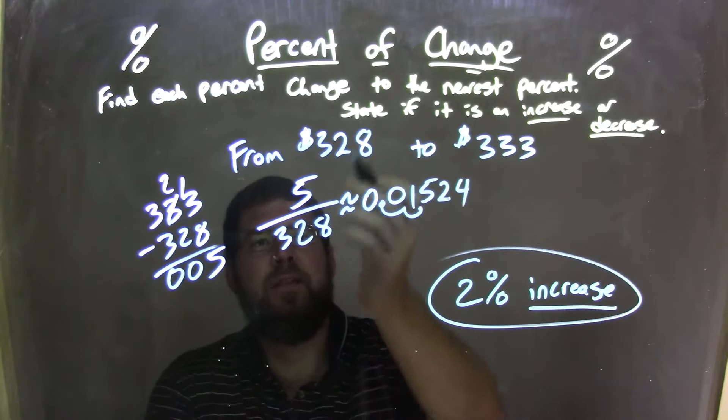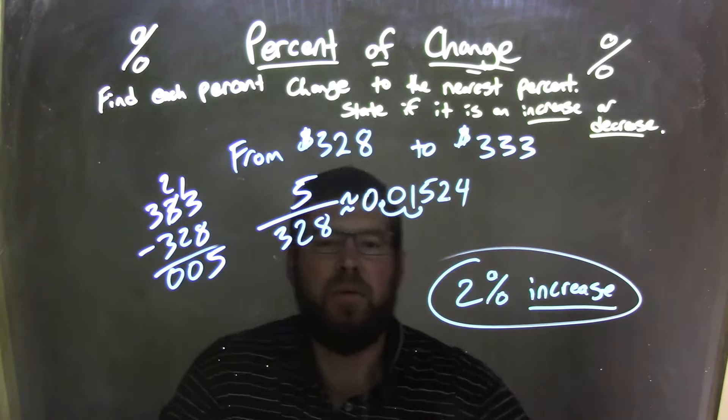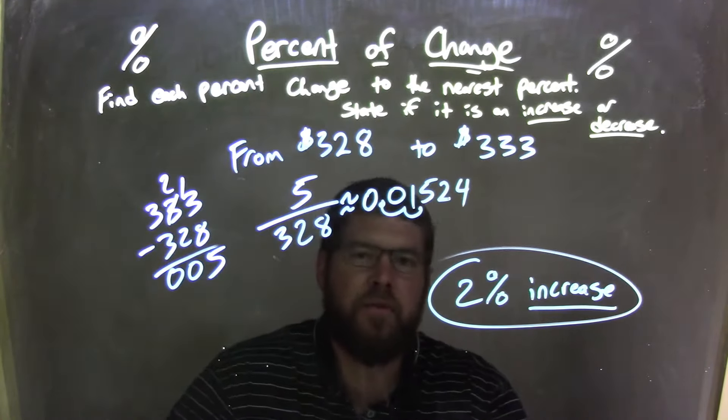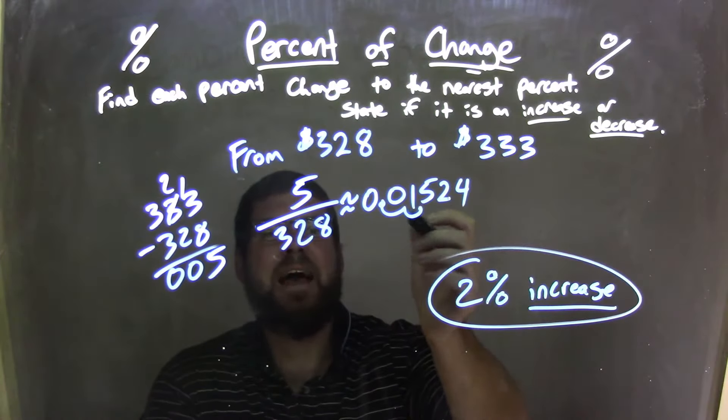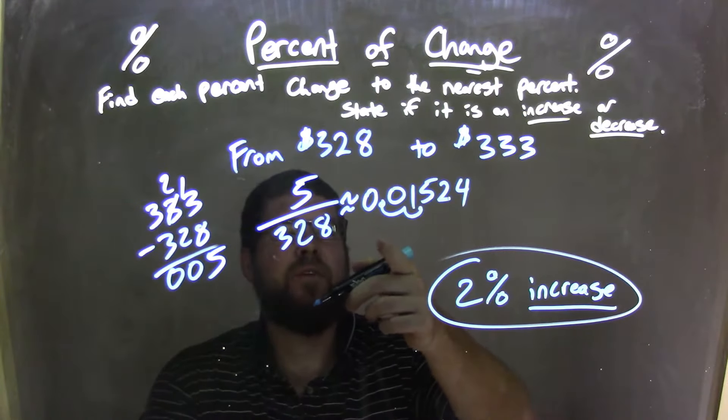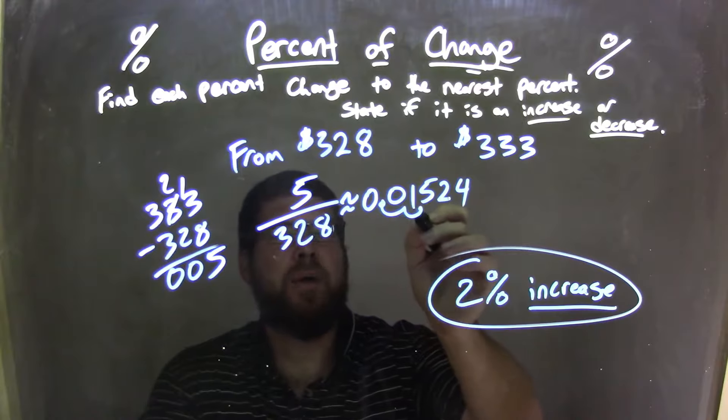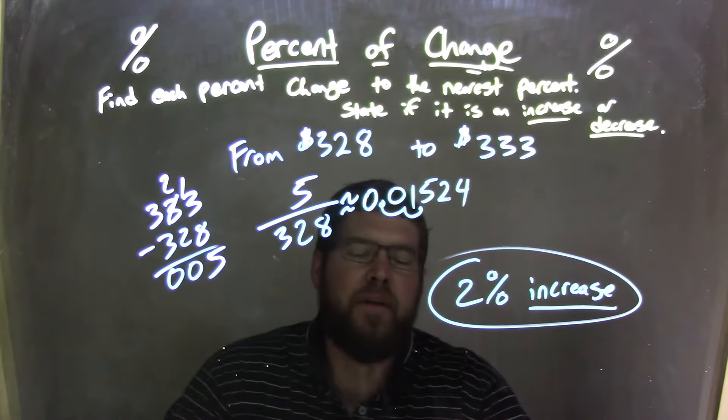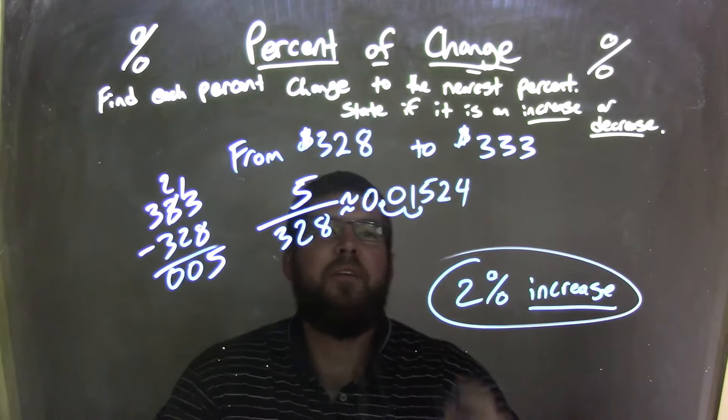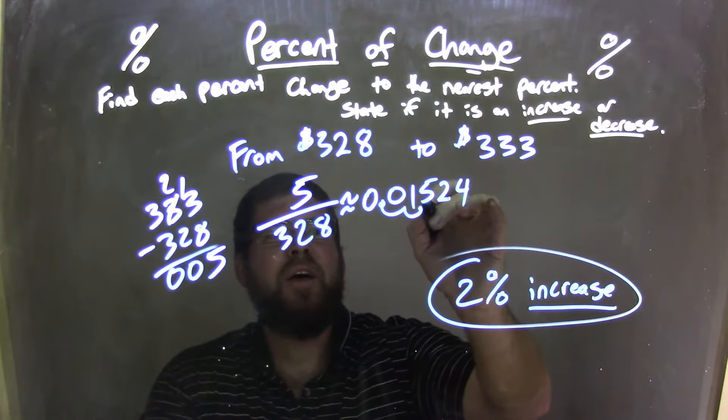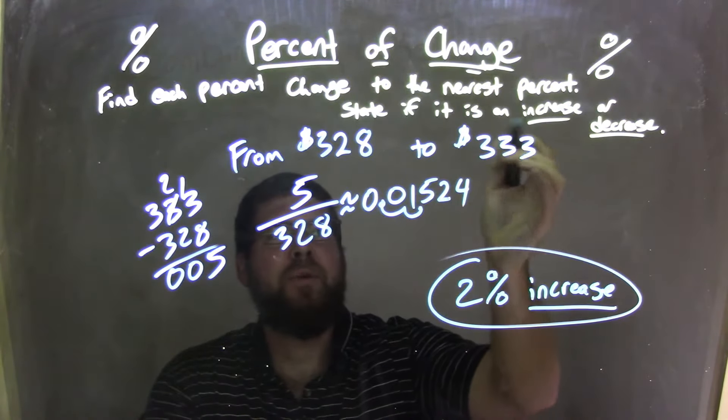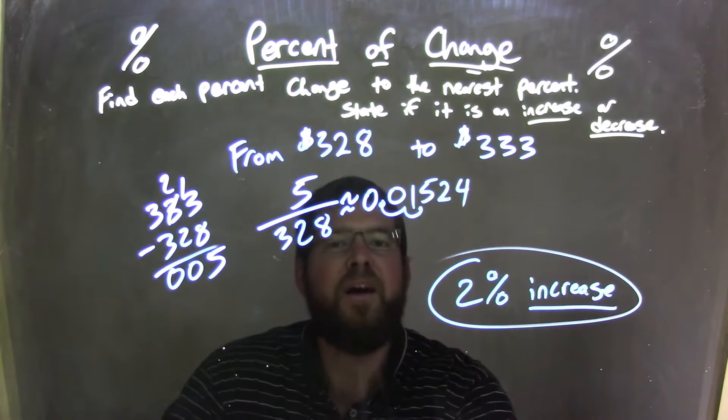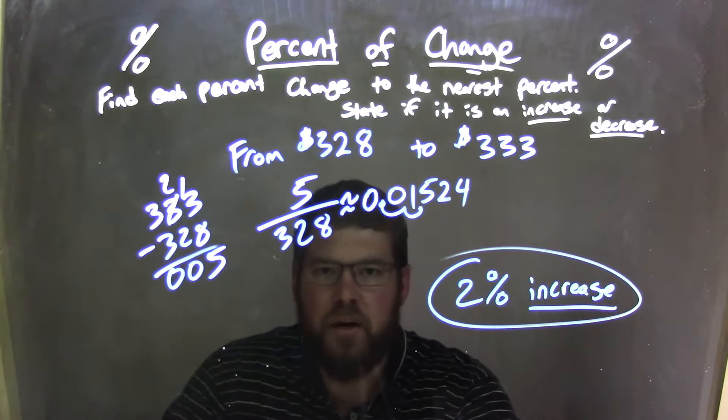So we take that five divided by $3.28, the first number. That gives us approximately 0.01524. We then take that and move it over. It's a decimal, convert to a percent. Move the decimal over two spots to get 1.524. That five makes the one round up to a two because we need to round to the nearest percent. And so we're left with a final answer of a two percent increase.